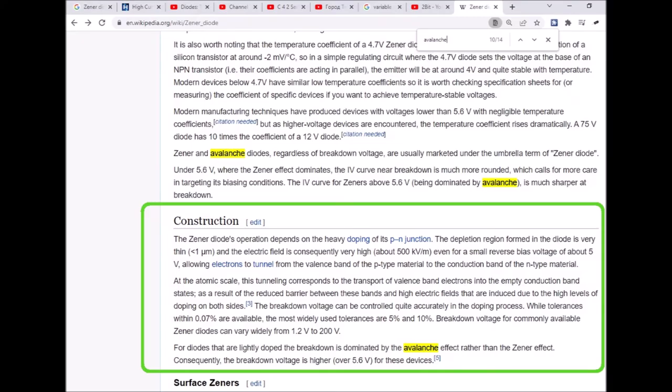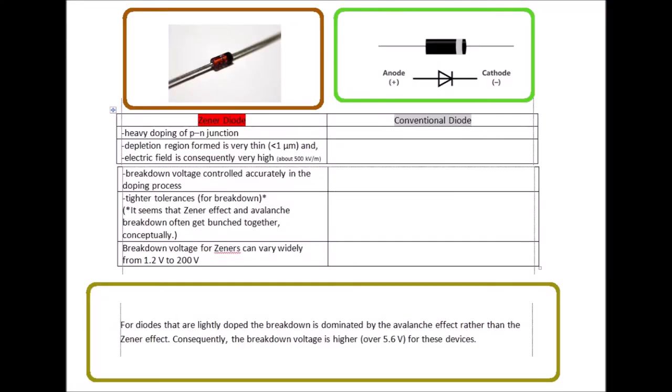I was reading the construction section of the Wikipedia page, and it lists some features specific to the Zener diode. But I found it complex. So I thought maybe if I put it into a chart, this might help. And especially if I compared it to a conventional diode. The problem is that I didn't find enough information regarding a so-called conventional diode to fill up the right side of this chart.